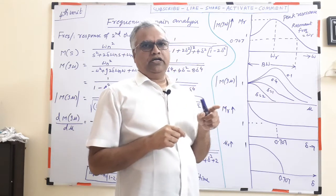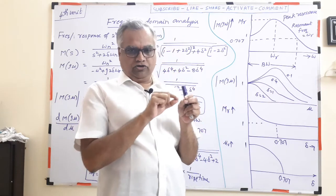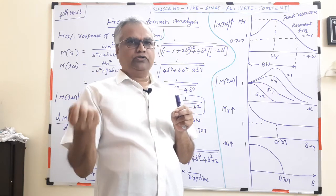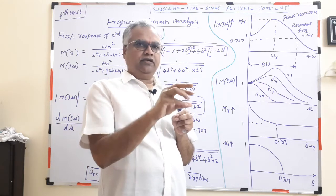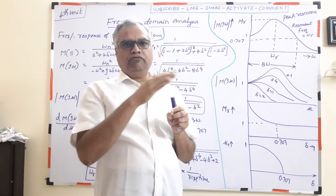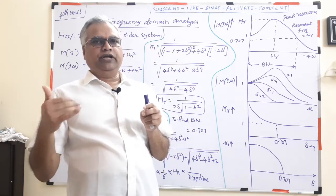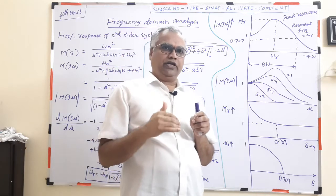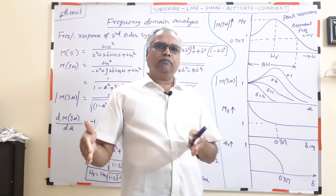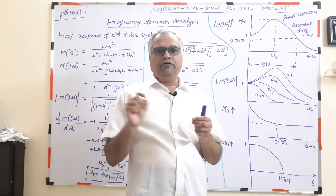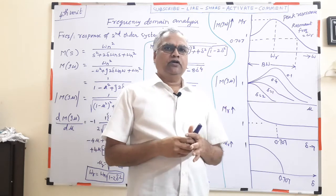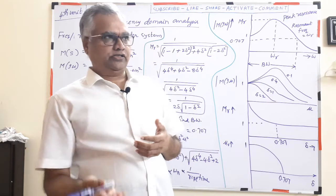In that experiment, we keep the input voltage Vi constant for every value of frequency, find the output, and compute gain as output divided by input. We plot gain versus frequency, take the highest value divided by root 2 to get the bandwidth. Similarly, we plot frequency versus phase. That is what frequency domain analysis is.